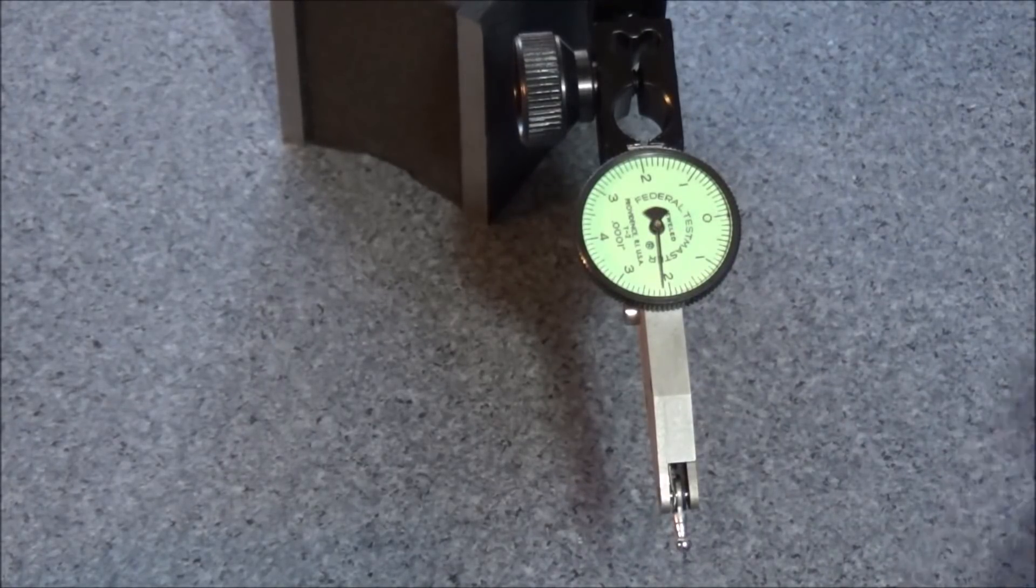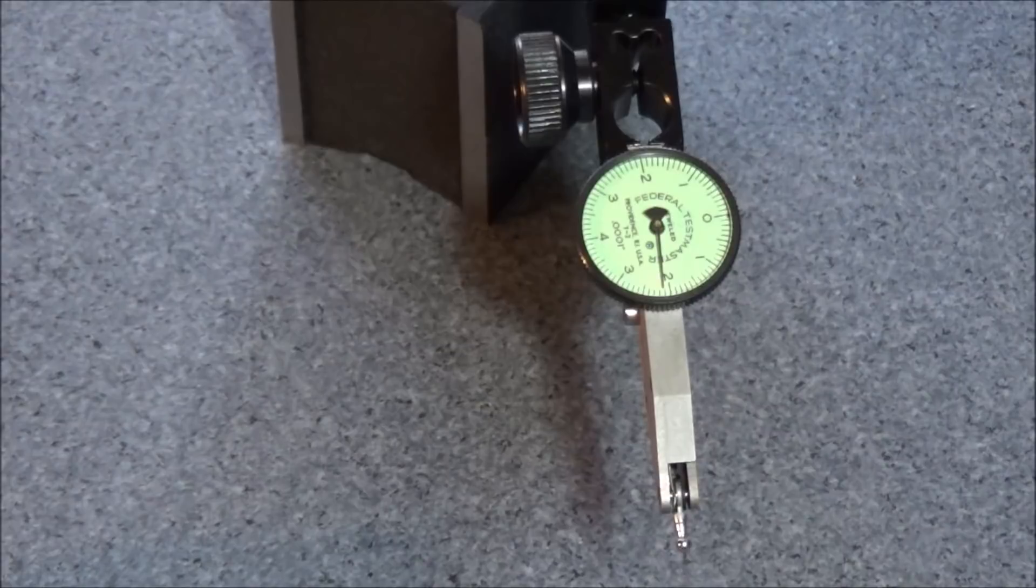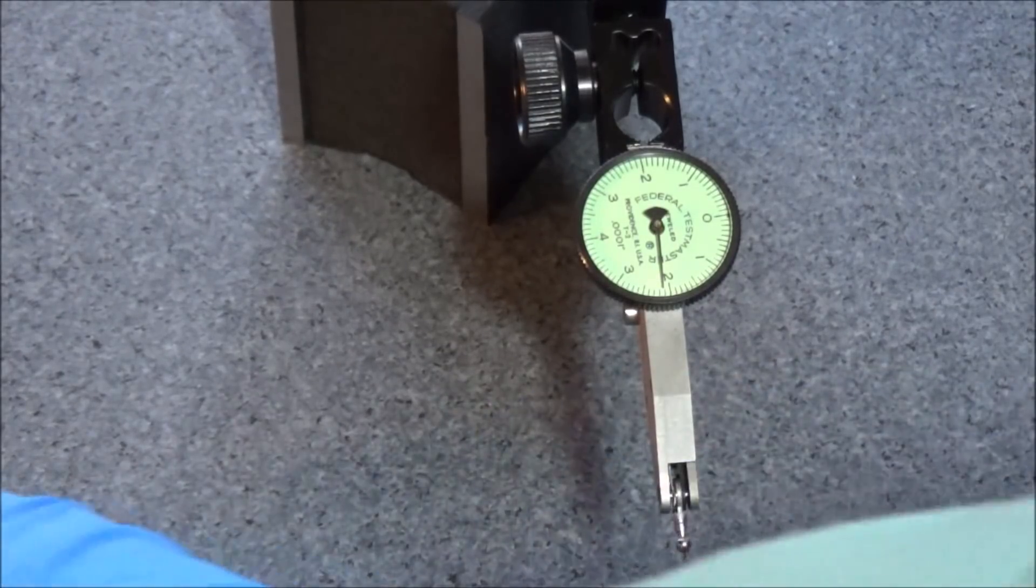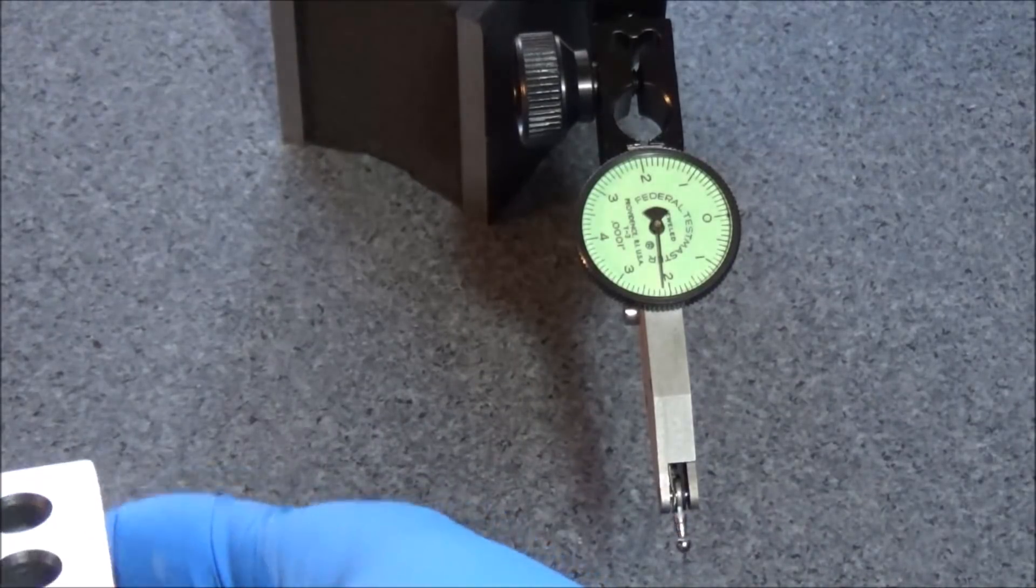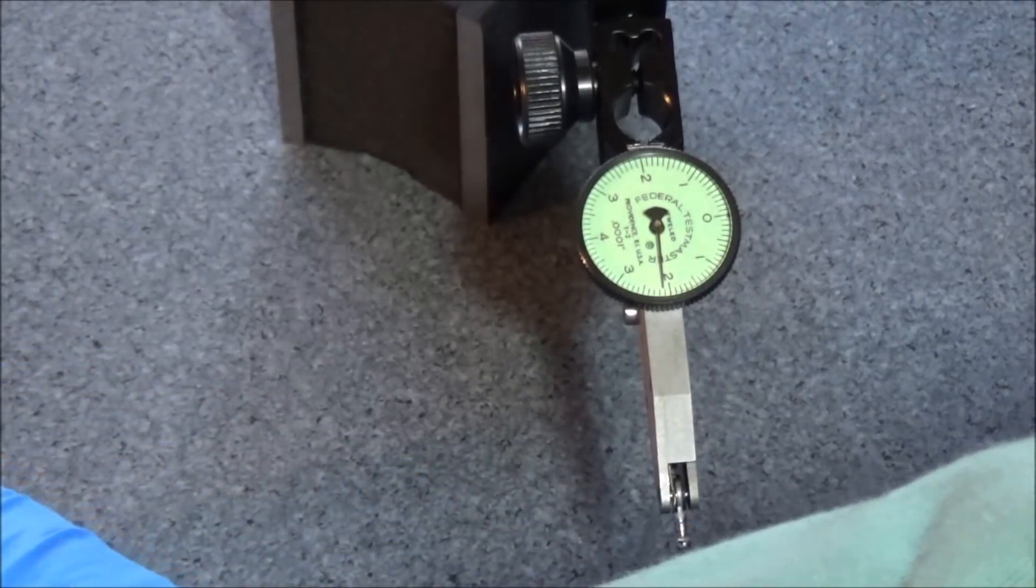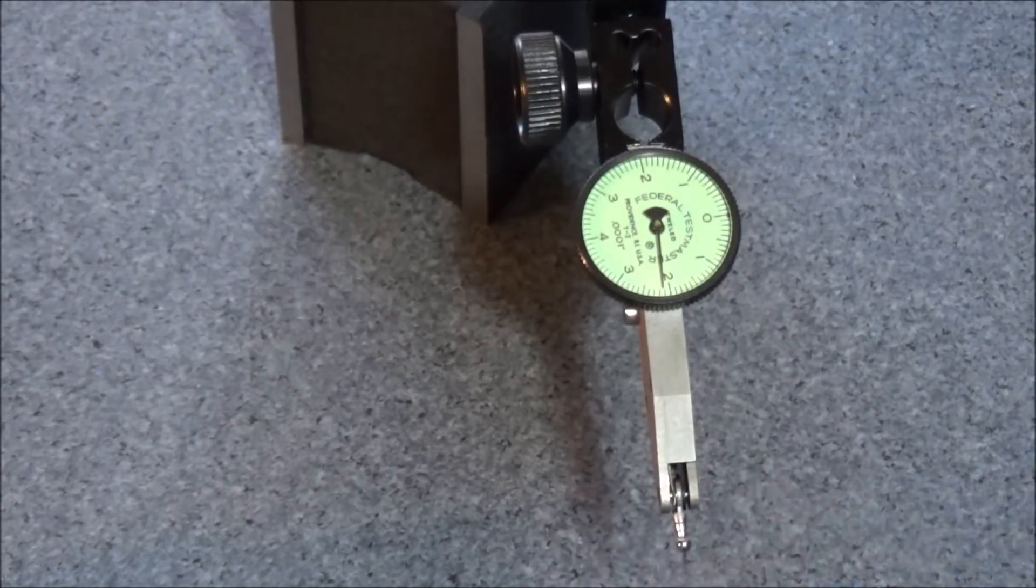Alright, so you can see that they're not all the same and you want to just make sure that you check all your 1-2-3 blocks and make sure they're all the same height when you go to check your ways.